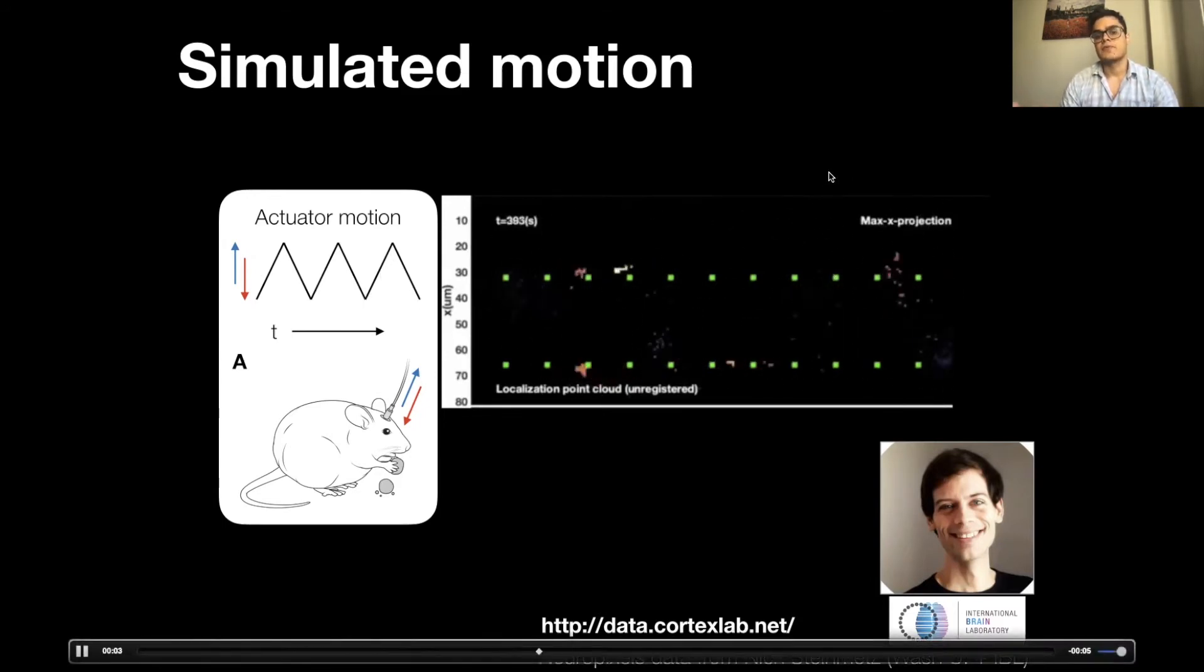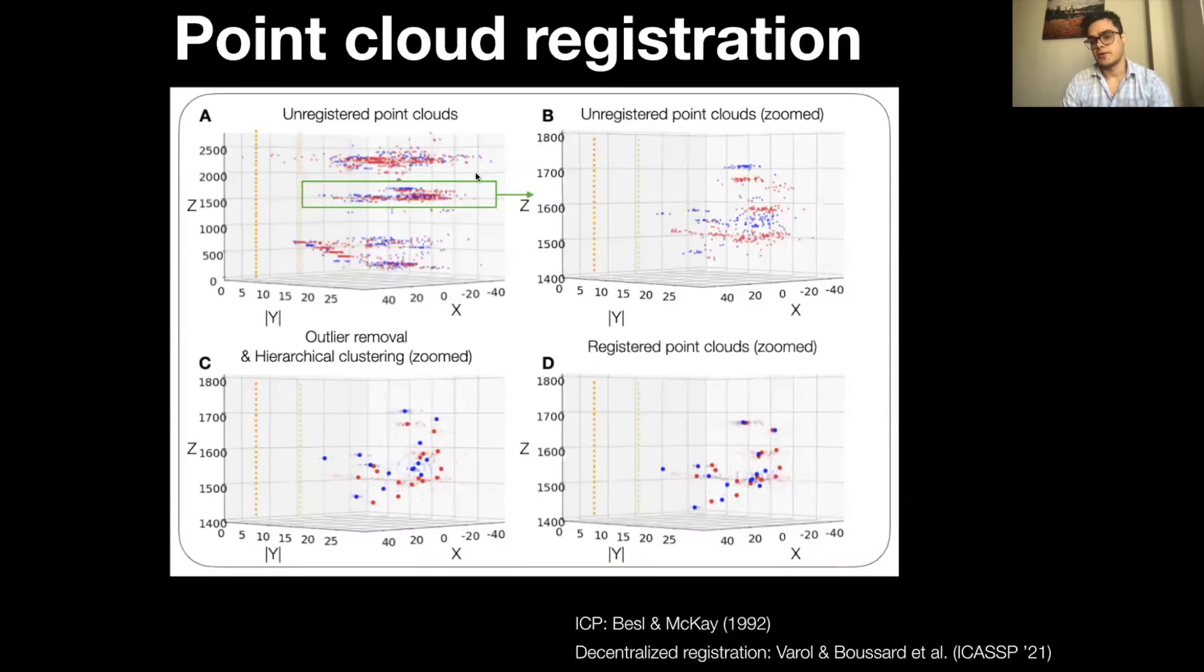To estimate motion, we first generate three-dimensional point clouds for spikes observed in each one second of data. Given these sets of point clouds, we can then estimate how much displacement occurs between any pairs of time bins using the iterative closest point algorithm or ICP for short. To make ICP more robust and faster, we also prune the dense point clouds to generate core sets for each time bin, and these core sets display the exemplary spikes that summarize the overall spatial distribution of spikes in each time bin.